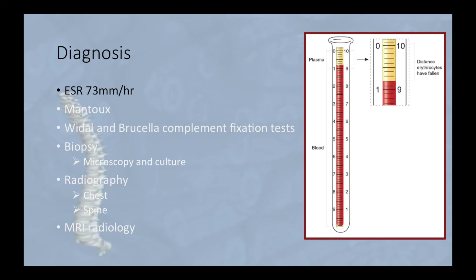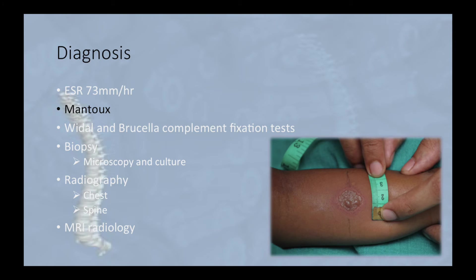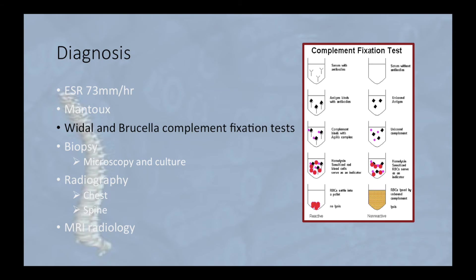Investigations are essential in the diagnosis of spinal TB. These include erythrocyte sedimentation rate (ESR), which is usually elevated — it can be as high as 73. If the ESR is more than 100, the primary two differential diagnoses are TB and myeloma. A Mantoux test is positive 90% of the time.